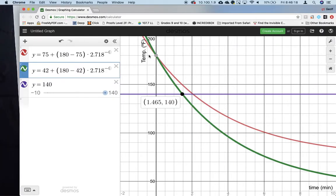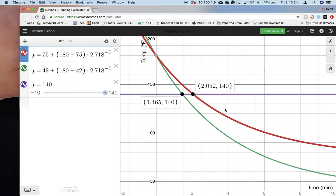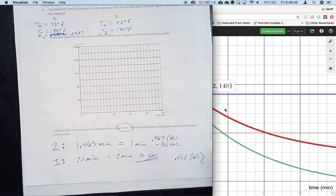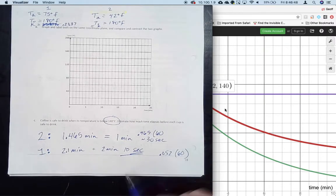This is coffee cup 2, safe to drink, which translates to a minute and then 0.465 times 60 - because there are 60 seconds in a minute - that gives us approximately 30 seconds. Coffee cup 1, going back to the graph, is modeled by the red line.